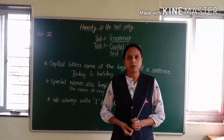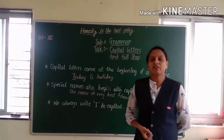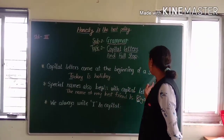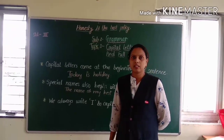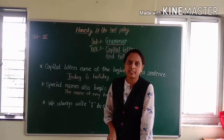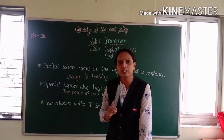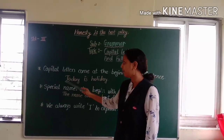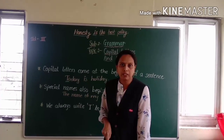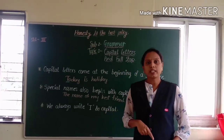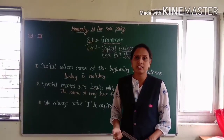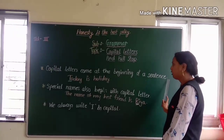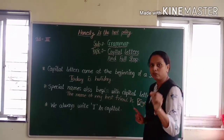The first rule: capital letters form at the beginning of a sentence. Whenever we start a new sentence we have to use a capital letter. For example, 'Today is holiday' — so I will write 'T' as capital. When we start a new sentence, how can we recognize it? When we end a sentence with a full stop.